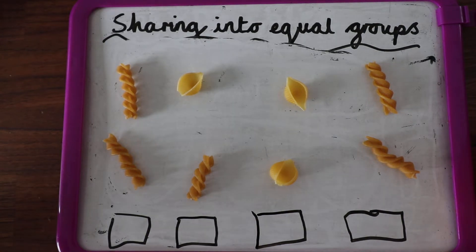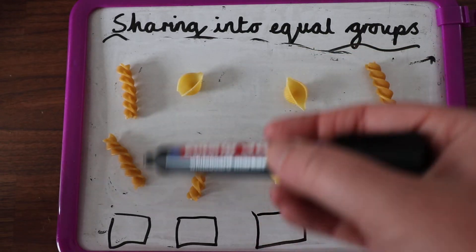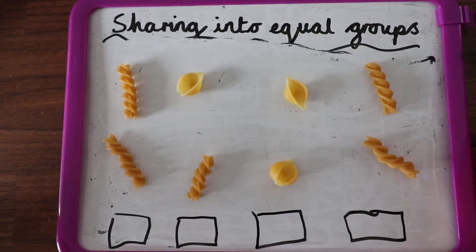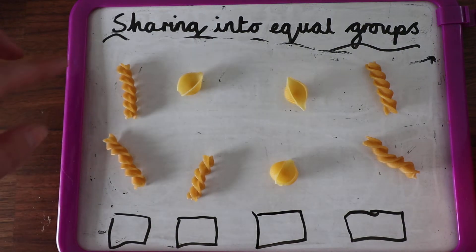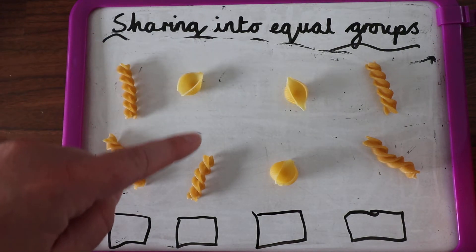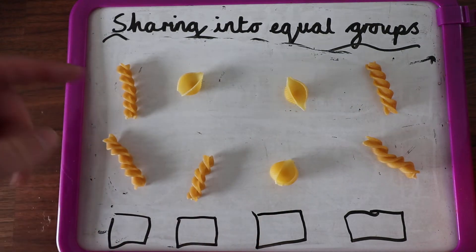So I know, I'm not going to draw around this time, but if you've drawn around them, that's great. I know I've got them and they're all in line with each other, aren't they? They're in groups already. So I've got one group of two here, one group of two here, one group of two, and one group of two.